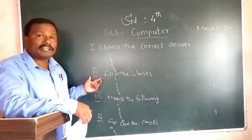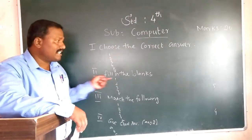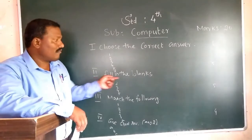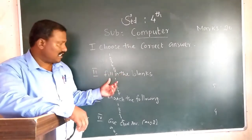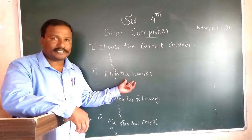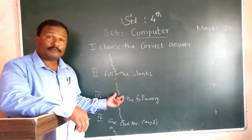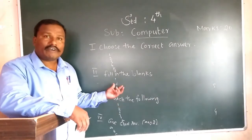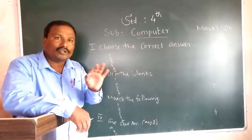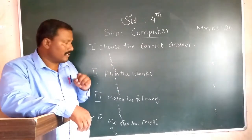Then Roman numeral II: Fill in the blanks. Write this title on your paper. After that, write question number 1 with only the answer — don't write the question. Questions go from number 1 to 5, a total of 5 questions. Only write the question number with the answer.